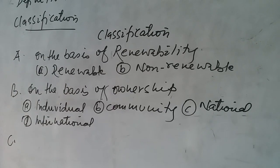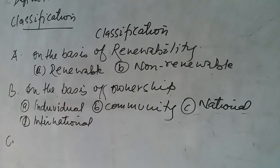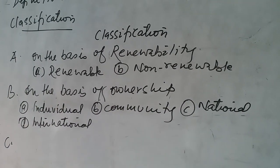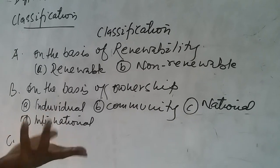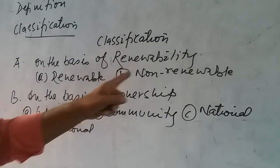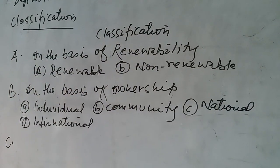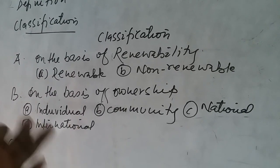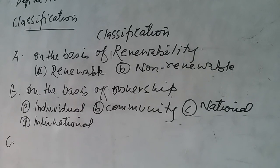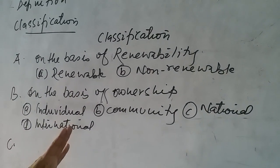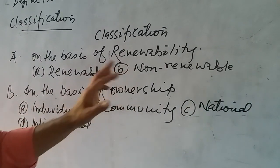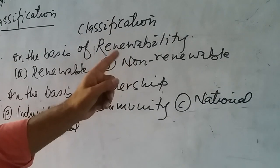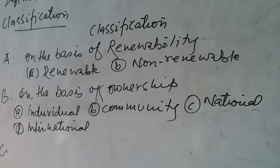We are regularly using the atmosphere, that air, that water, those plants, and then they are remade again. Non-renewable resources are those which can be used by human beings, but again they cannot remake themselves. For example, petroleum. It is better to say that all minerals are non-renewable resources. After use, they cannot be remade again.